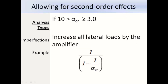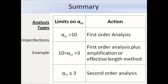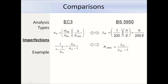If alpha crit falls between 3 and 10 then we can apply an amplifier to all of the lateral loads on the structure. The amplifier is 1 over (1 minus 1 over alpha crit), which is equivalent to alpha crit over (alpha crit minus 1). That is equivalent to k_amp that you would have used in BS 5950. For values of alpha crit larger than 10, we don't need to worry about second order effects and can use first order analysis — the limit value of 10 is the same as used in BS 5950. For values of alpha crit between 3 and 10 we apply the amplification factor. For values less than 3 we need to perform second order analysis. In summary, alpha crit in Eurocode 3 corresponds to lambda crit in BS 5950, and both codes use amplification factors, so the concept is not that different overall.